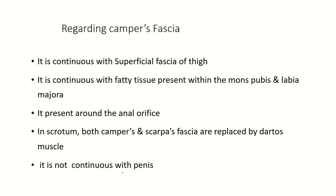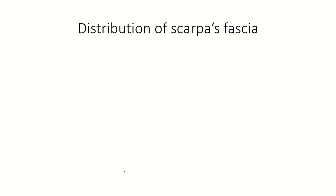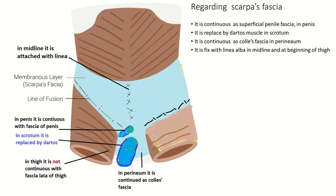Now the distribution of the Scarpa fascia. At the midline it is fixed with the linea alba. In the thigh it is fixed with — but not continuous with — the fascia lata. In the penis it is continuous with the fascia of the penis, and in the scrotum it is replaced by the dartos muscle.